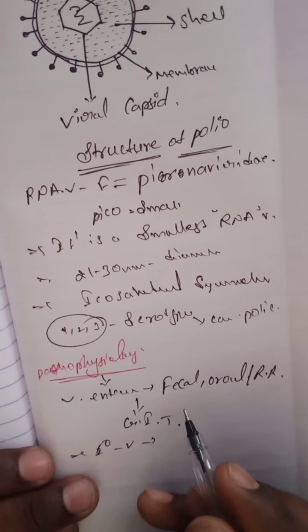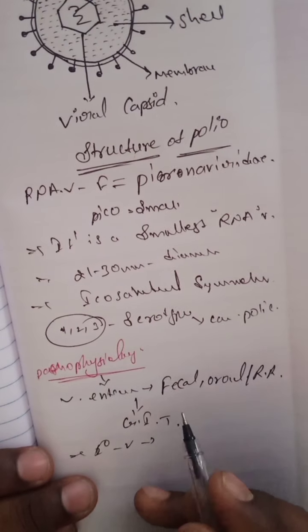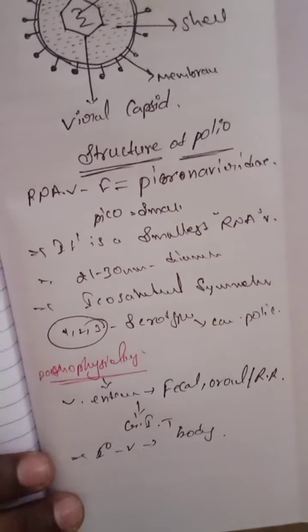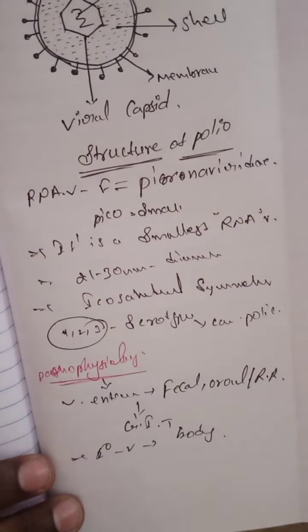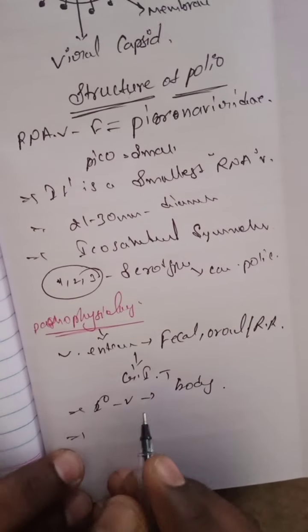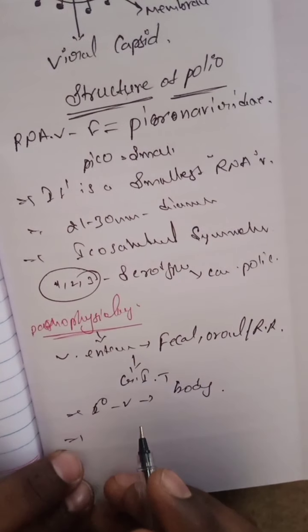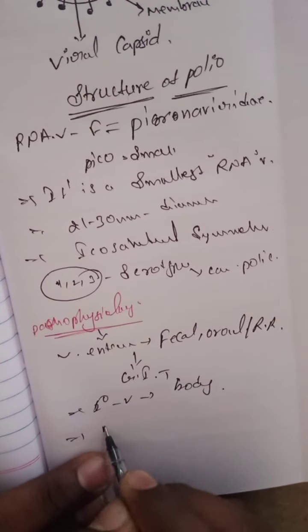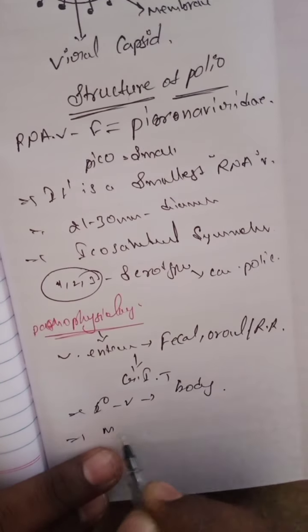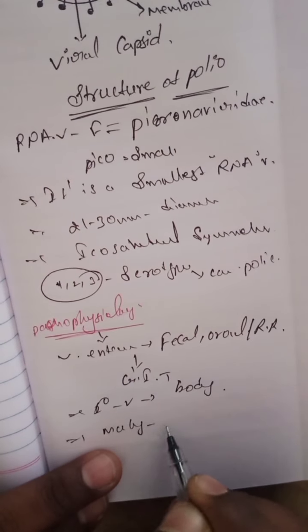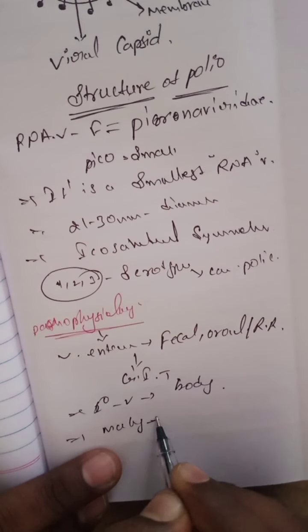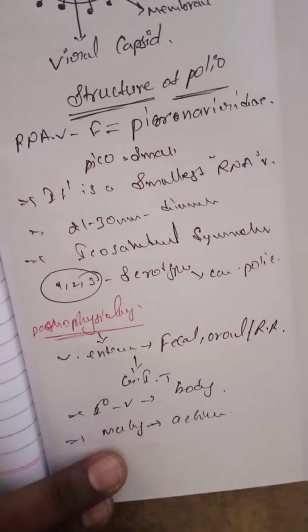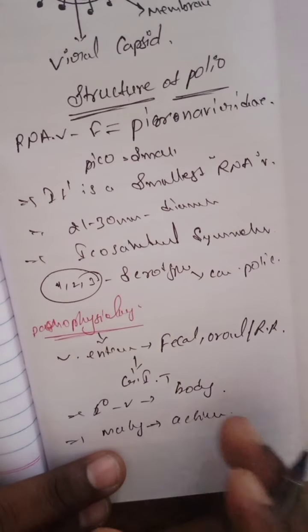The virus spreads throughout the total body. The infection may be contained at that point, or it may further multiply. After multiplying, it shows further activity.